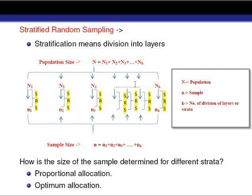An important question in stratified random sampling is how we determine the size of the sample for different strata. By using the methods of proportional allocation and optimum allocation we can determine the sample size for different strata.